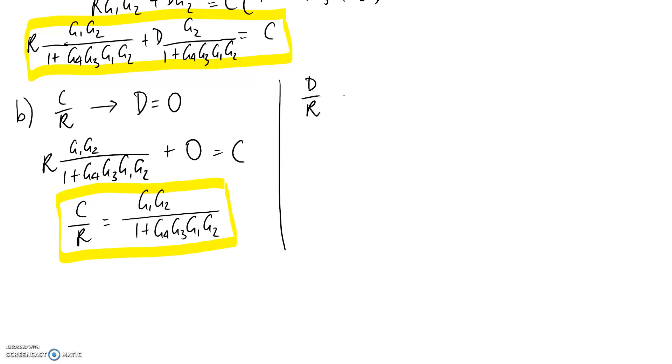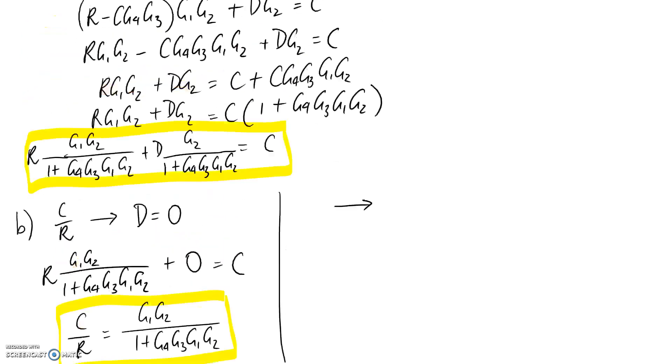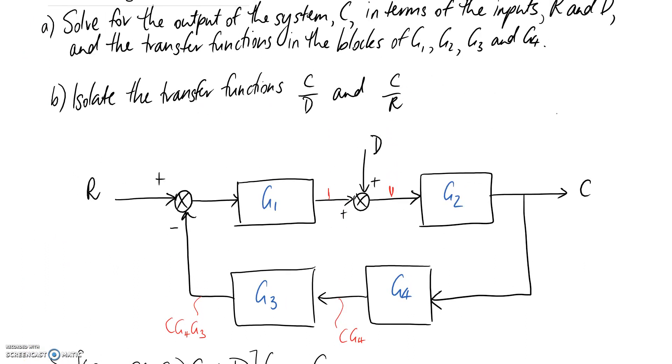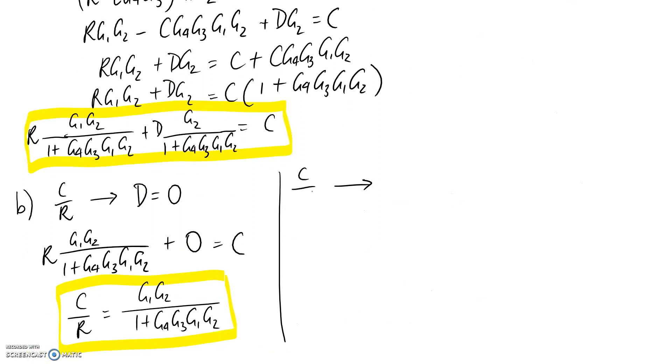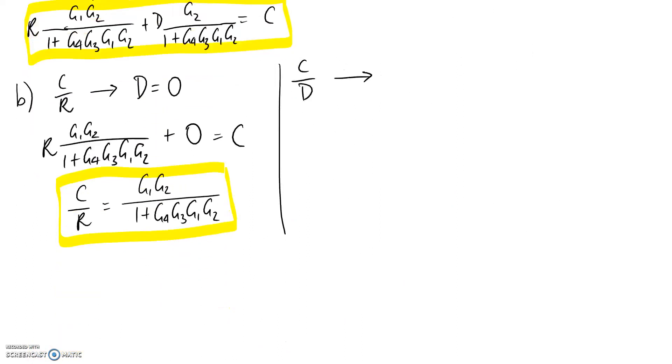The other one we wanted was C on D, the output over the input. What that means is now we need to set all the other inputs to zero, so the only other input that we had was the R one, so that needs to go to zero. If we now go through and apply the same kind of process onto this equation, this term here is going to go to zero because R has gone to zero.